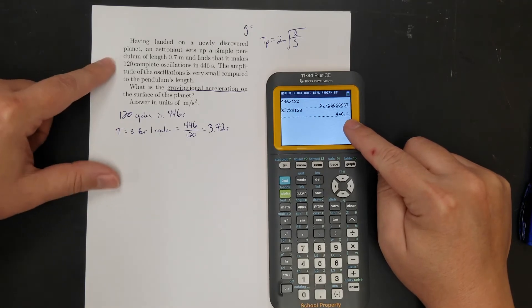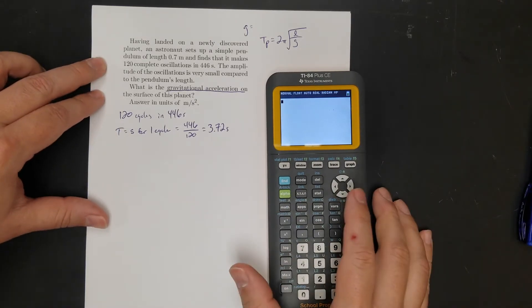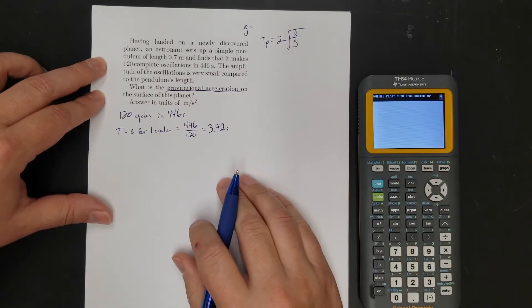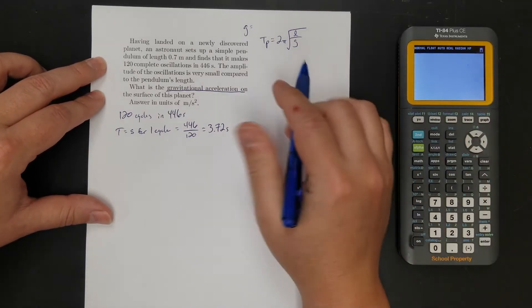So let's do 446 over 120. And that gives me 3.7, about 3.72, equals 3.72 seconds. That's going to be my period. So good habit to be in is check your work. Make sure it makes sense.